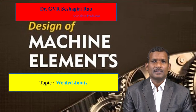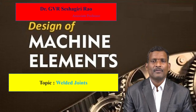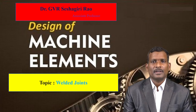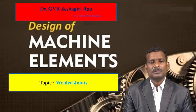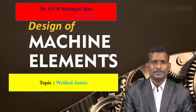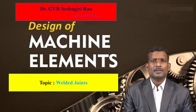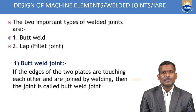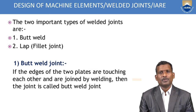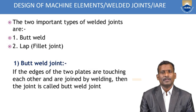Today in this session, I want to discuss about welded joints. As you know, joints are classified into temporary joints and permanent type joints. Welded joints are classified as permanent type joints. We will see what are the important types of welded joints and how to calculate the strength of different welded joints.